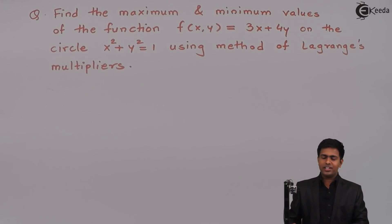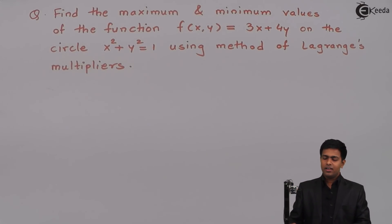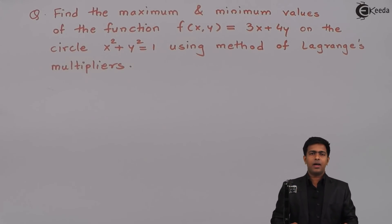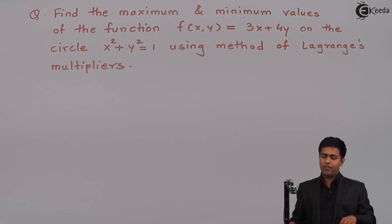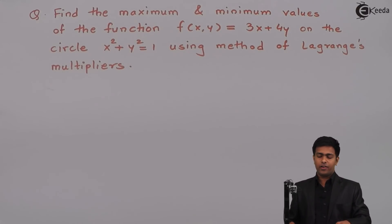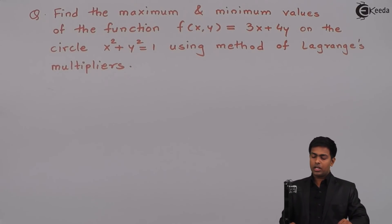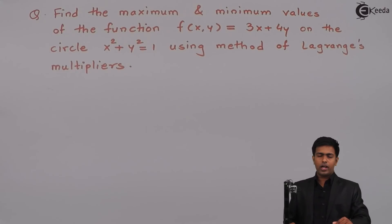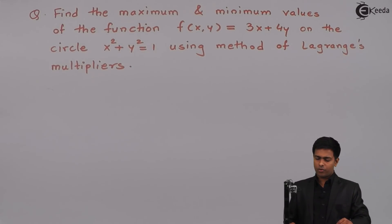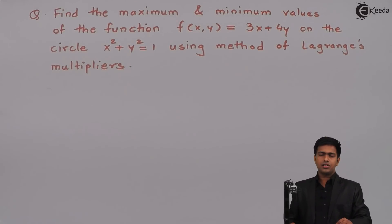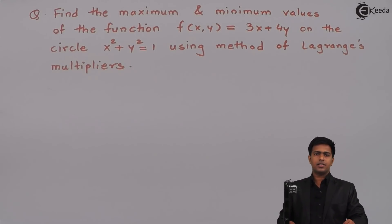Hello everyone. In this problem we have to find the maximum and minimum values of the function f(x,y) = 3x + 4y on the circle x² + y² = 1 using the method of Lagrange multipliers.